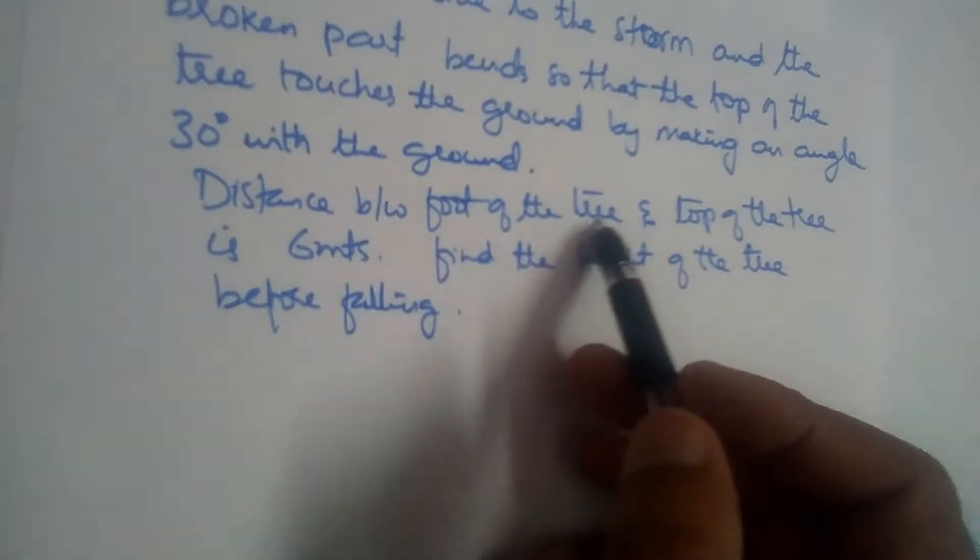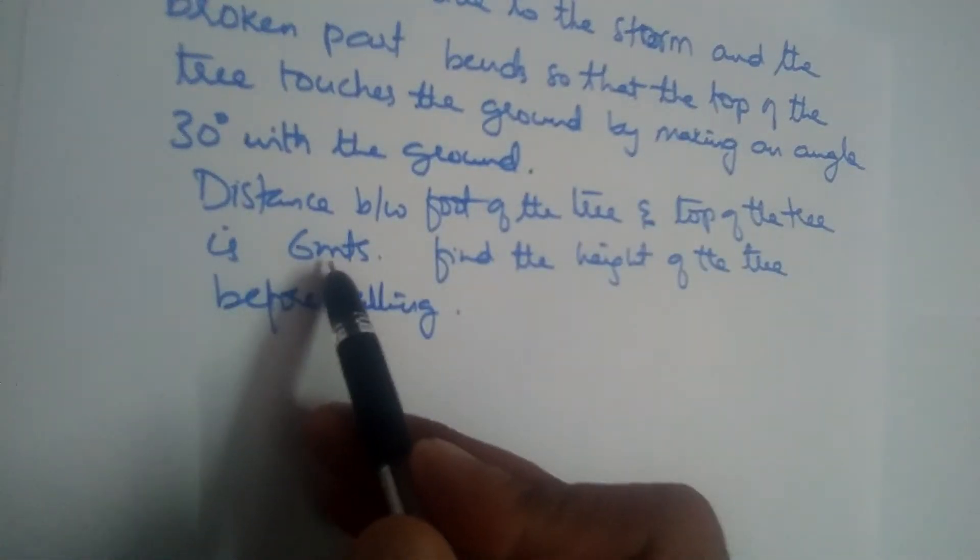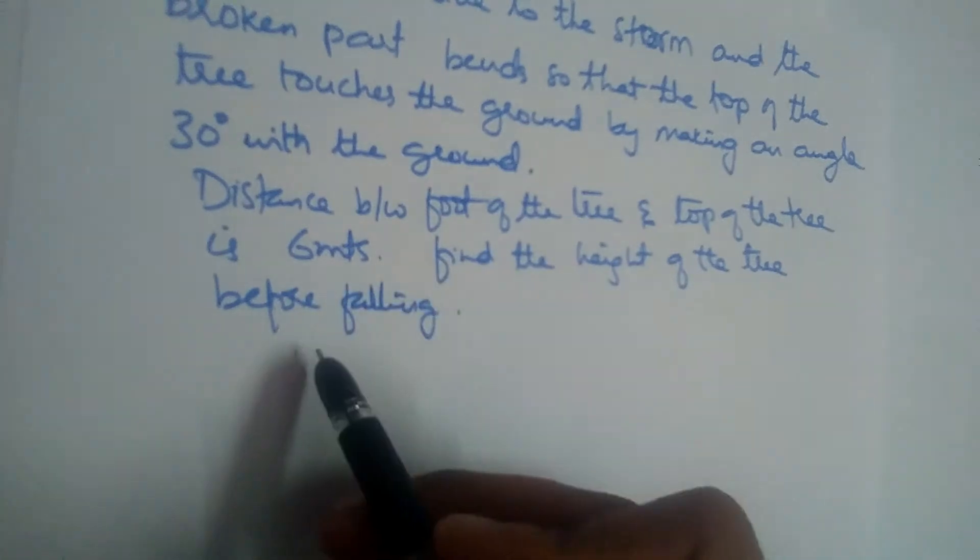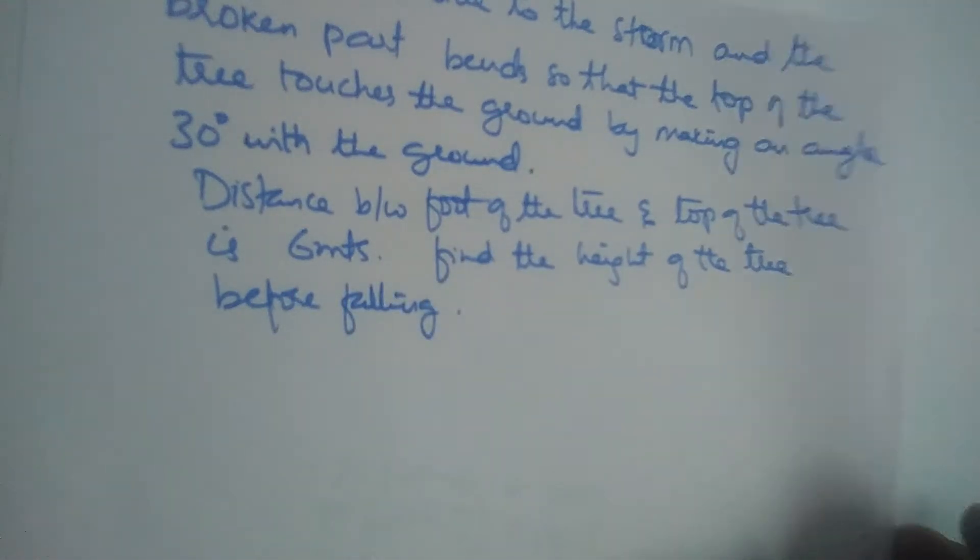So distance between the foot of the tree and top of the tree is 6 meters now. Find the height of the tree before falling.